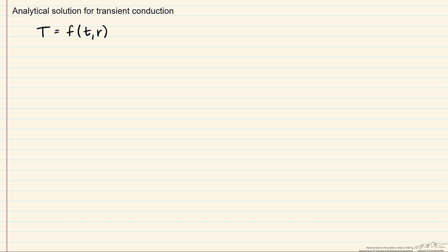However, this series can usually be approximated by a single term with adequate results, and that occurs if the Fourier number, which we'll talk about a little bit later, is greater than 0.2.